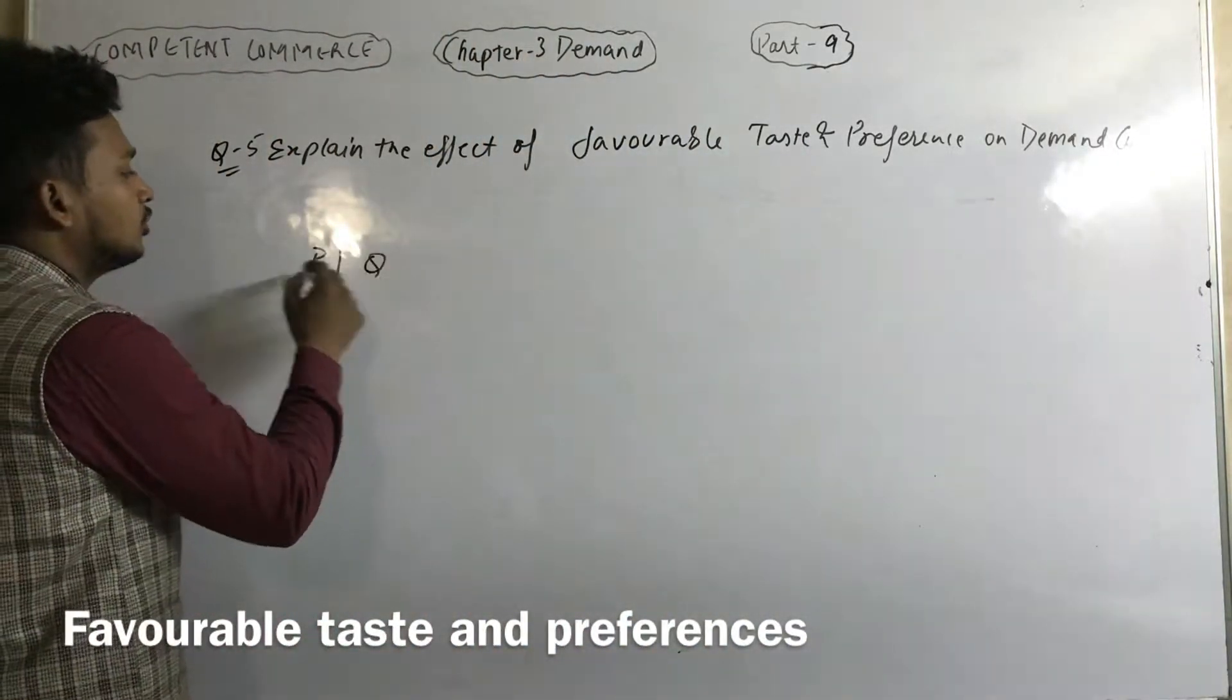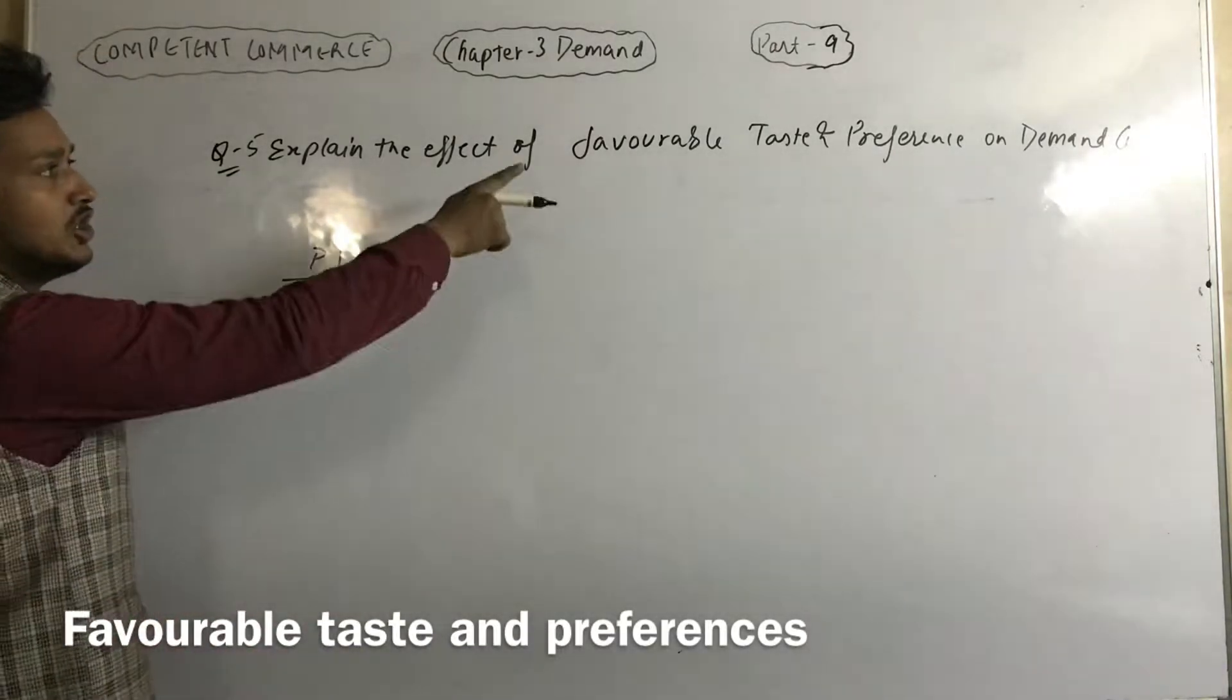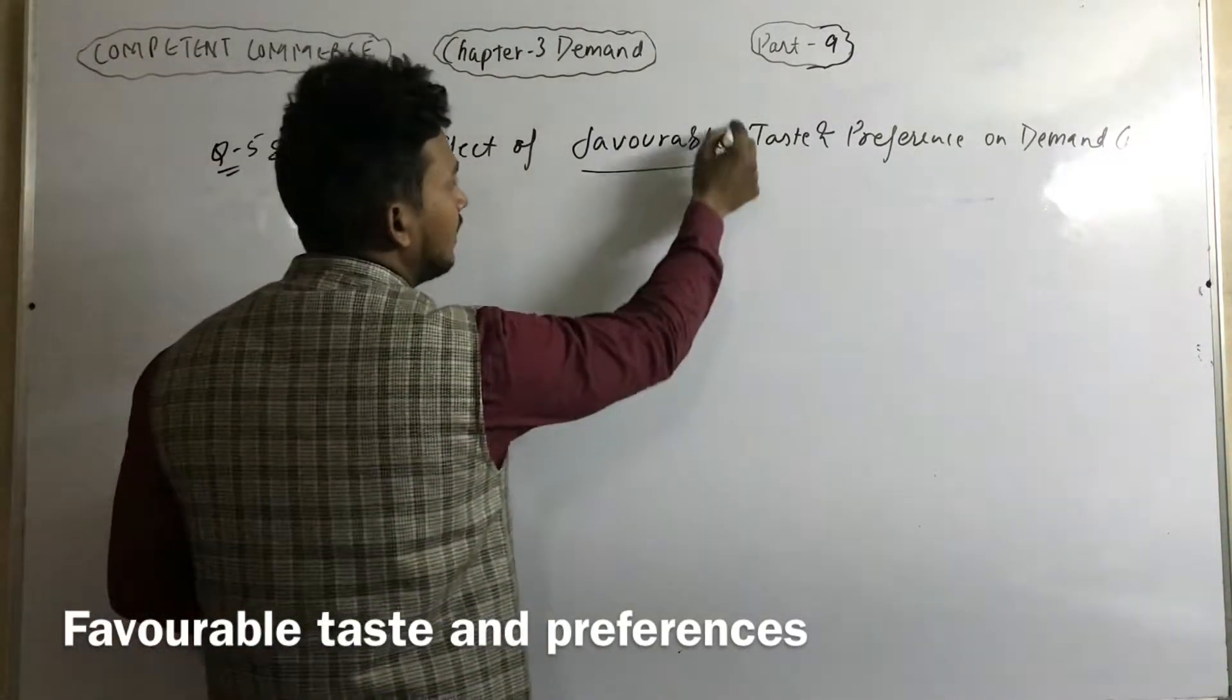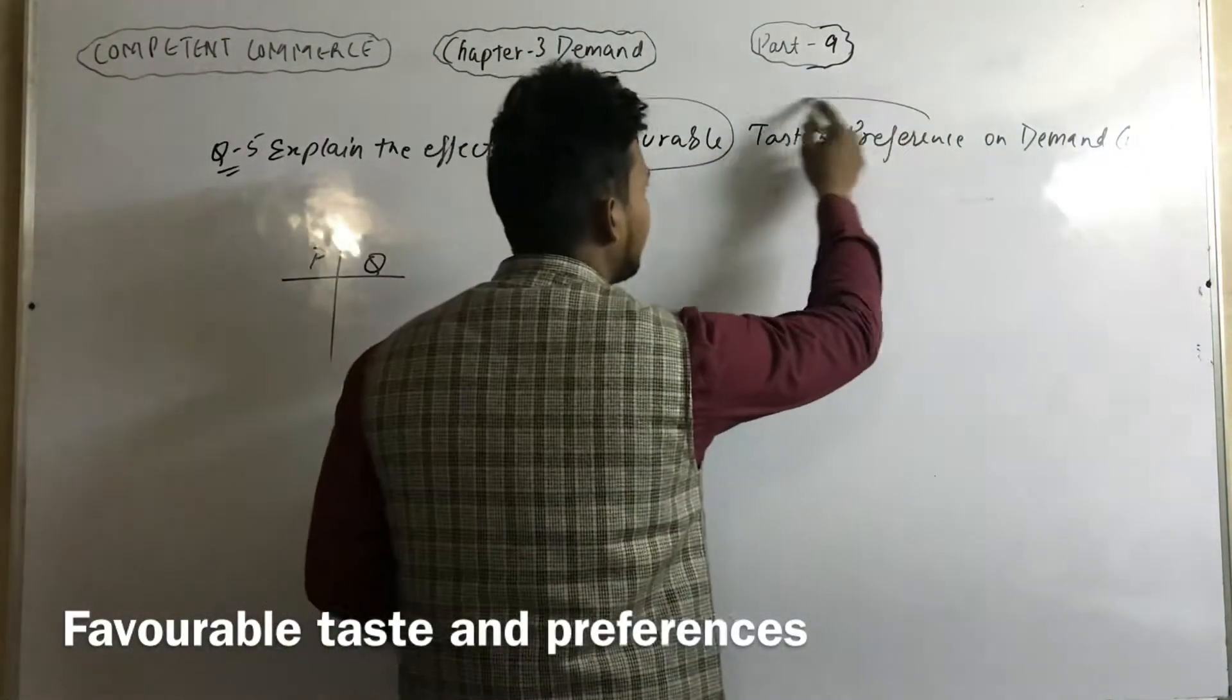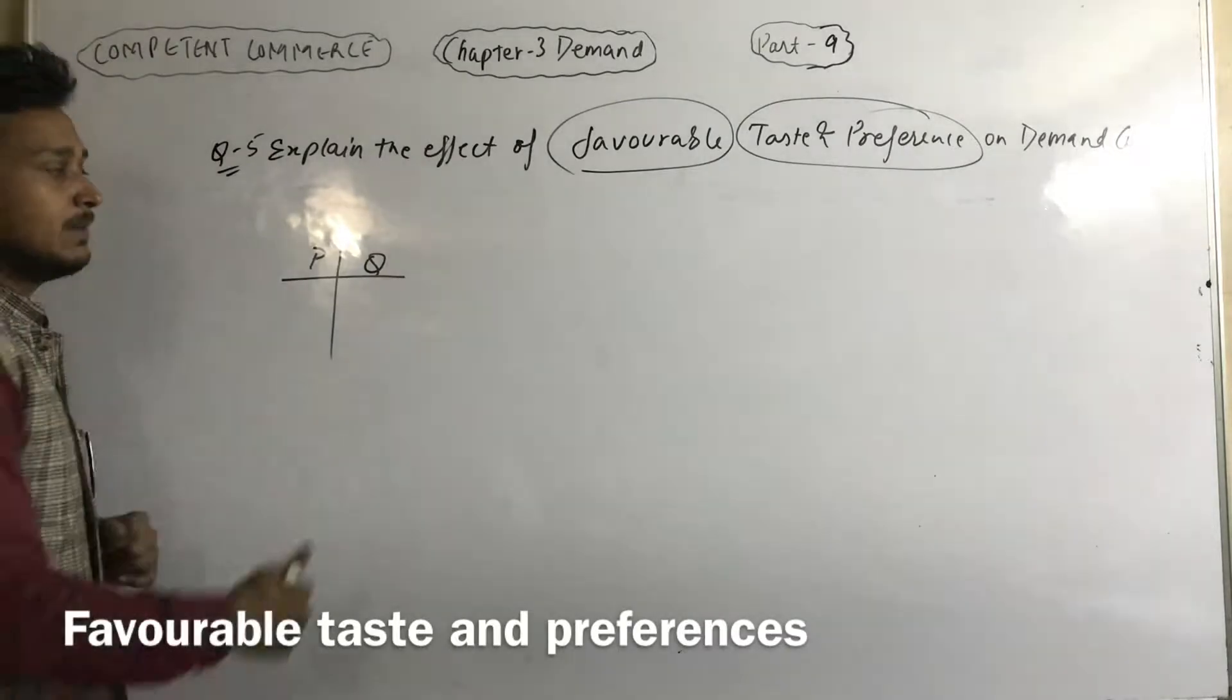First, the schedule. In the schedule there are two things: price and quantity. Price and quantity, both are given for the commodity here. What is the change? Your taste is favorable. What is the taste and preference factor in this time? Taste and preference.